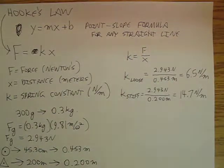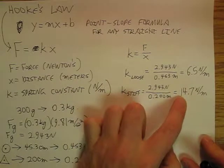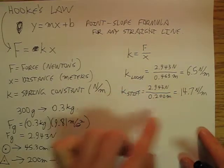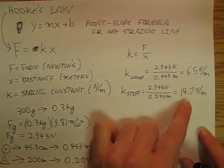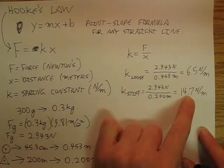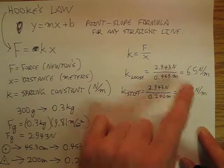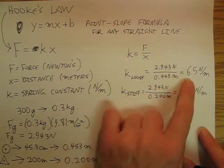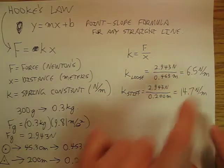So, the stiffer the spring, the higher the spring constant is going to be, because this one is going to be 14.7 newtons per meter, and that one, the loose one, is going to be 6.5 newtons per meter.